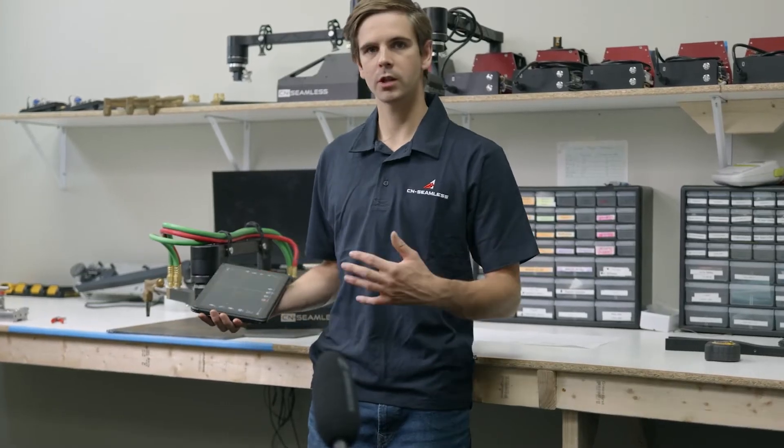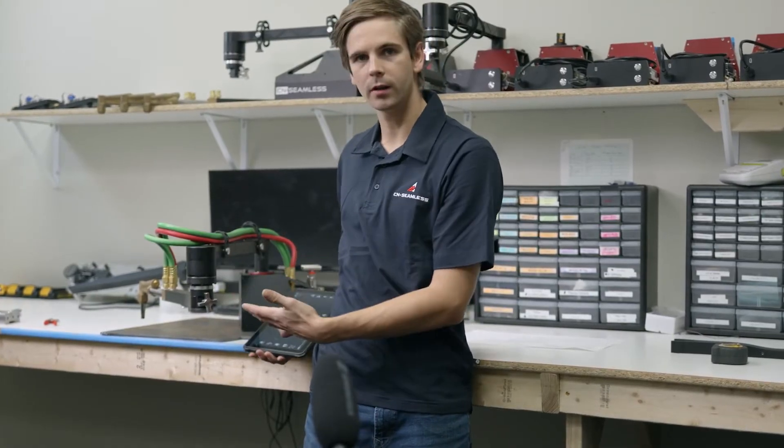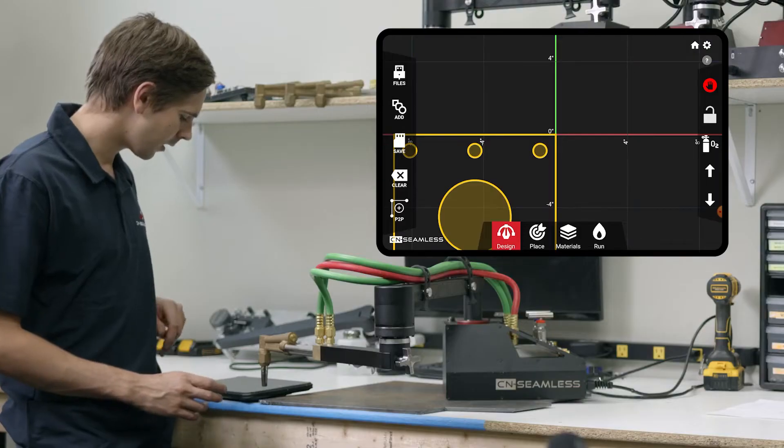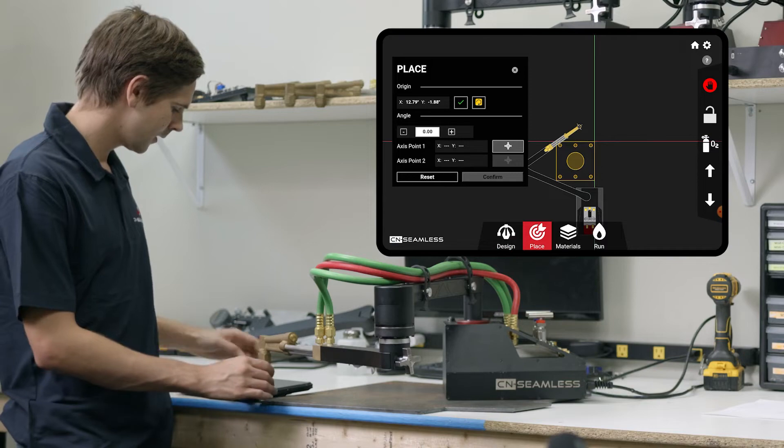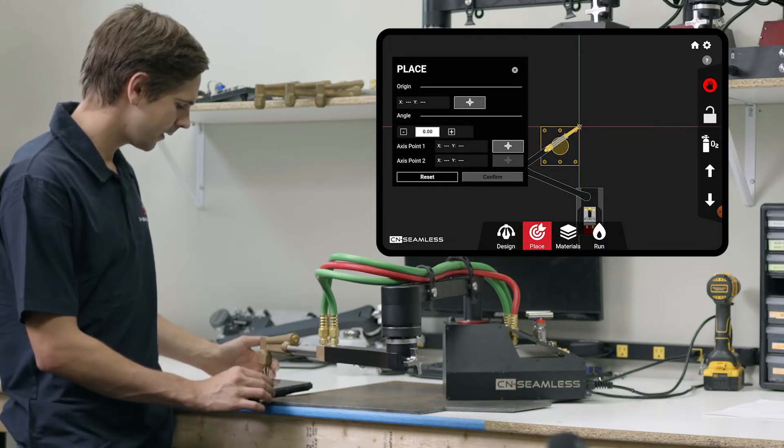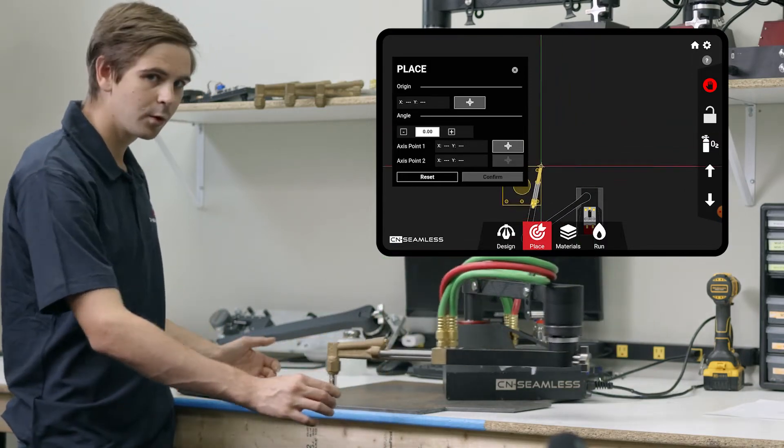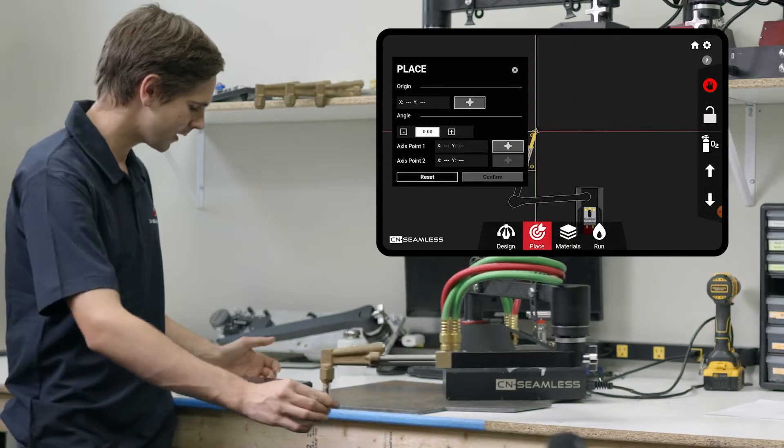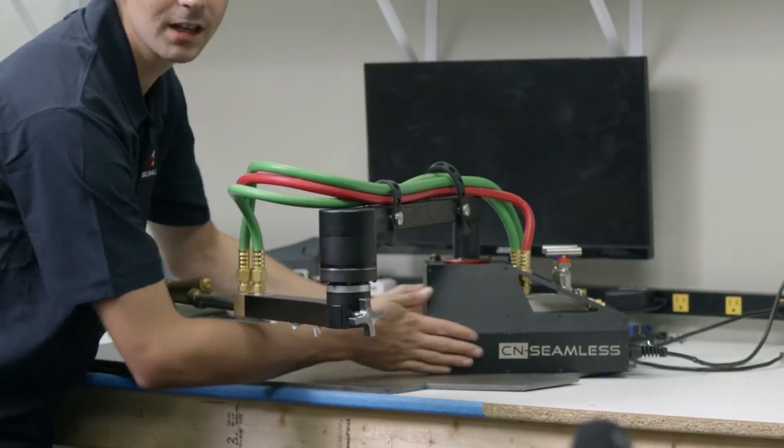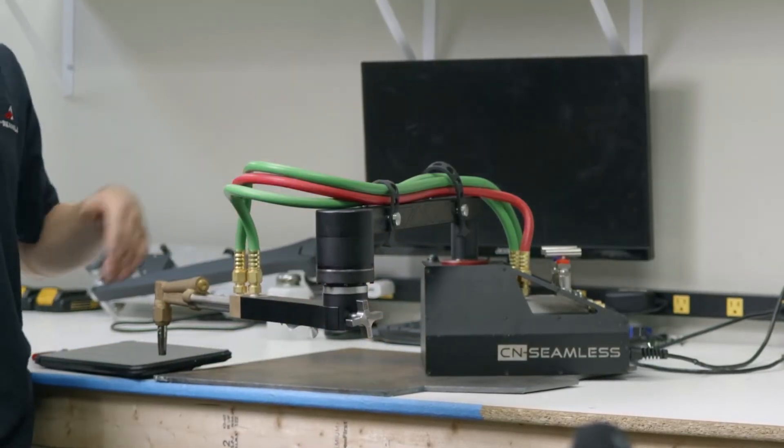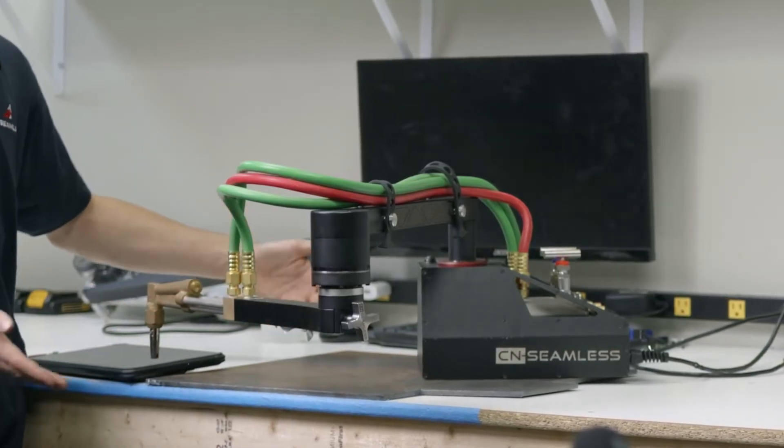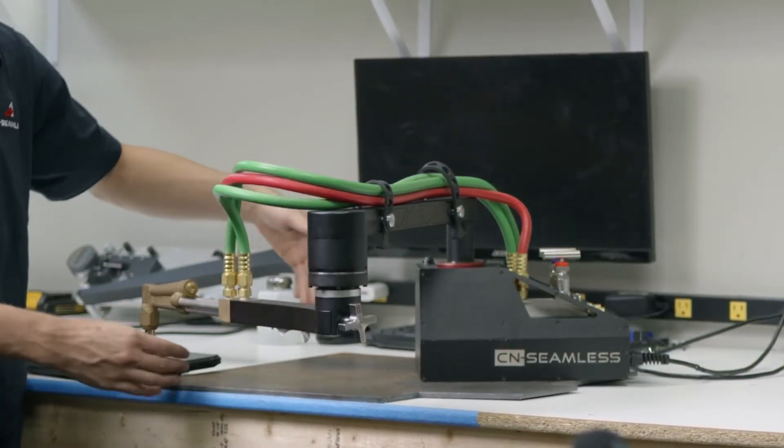What we have to do now is show the machine where on this material we want to do the cut. So when we click on the place menu, we're going to go and reset this orient. And now you can see as I move the torch, it's moving around that design. The problem is the machine is rotated probably like 40 degrees off of this edge.